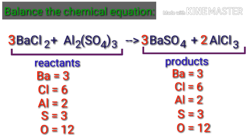The equation is now balanced. There are 3 barium atoms, 6 chlorine atoms, 2 aluminum atoms, 3 sulfur atoms, and 12 oxygen atoms on both sides.